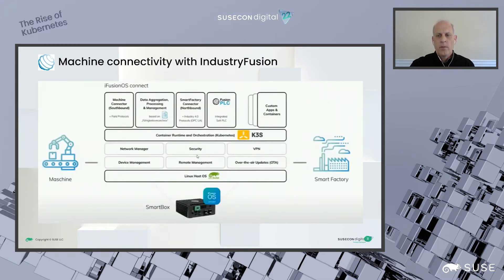Now let's talk about the software stack that operates on an Industry Fusion smart box. Within the industry in general and the Industry Fusion Foundation in particular, there is a preference to use open source technologies whenever possible. The smart boxes today are running on Intel-based processors and OpenSUSE as the operating system. OpenSUSE was selected because it is well known as a great platform for makers, sysadmins, and developers alike. It provides the layered services for things like device enablement, remote and network management, and security and updates needed to deploy K3s. From an Industry Fusion perspective, K3s is their base layer, and the different application components are deployed as pods on the K3s cluster.